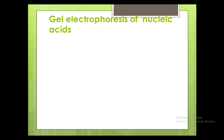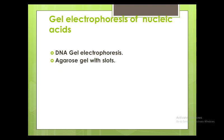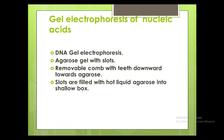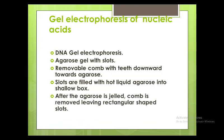What is gel electrophoresis of nucleic acids — DNA and RNA? In DNA gel electrophoresis, an agarose gel with slots is used. The gel contains a removable comb with teeth downward towards the agarose. Agarose is formed in molten form and slots are filled with hot liquid agarose poured into a shallow box. After the agarose solidifies, the gel comb is removed, leaving rectangular-shaped slots.